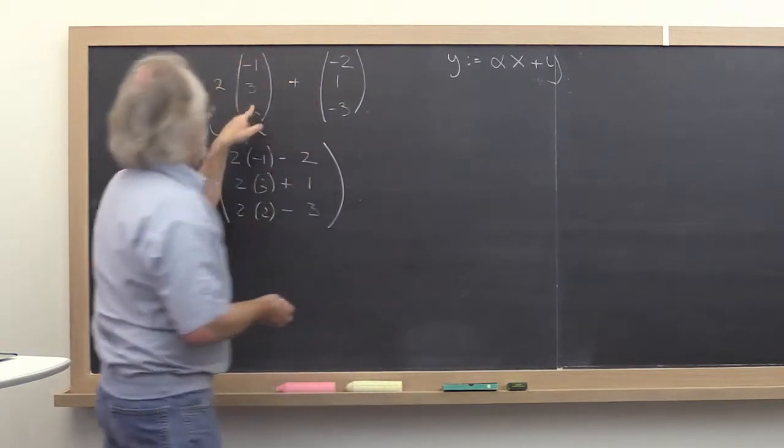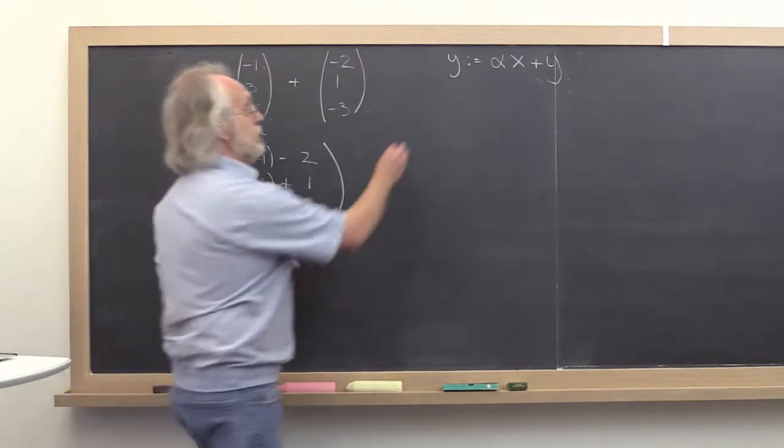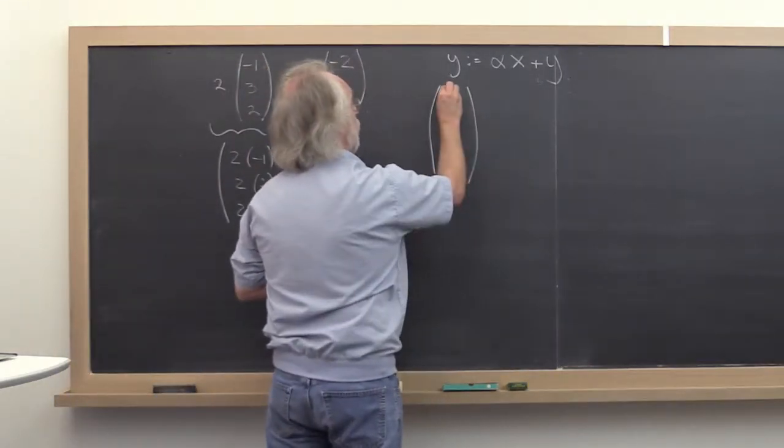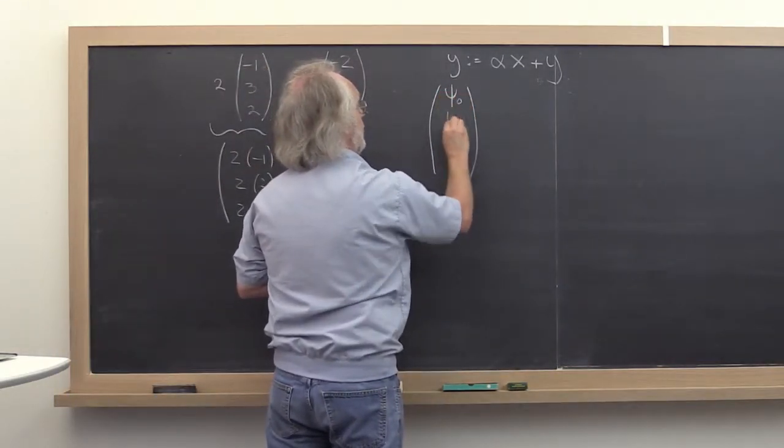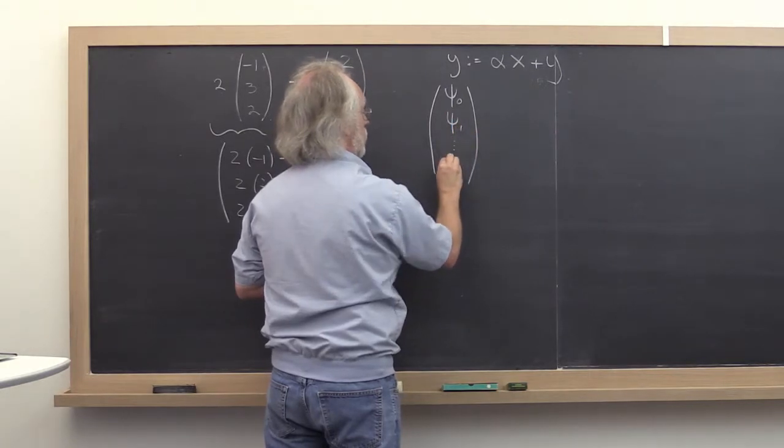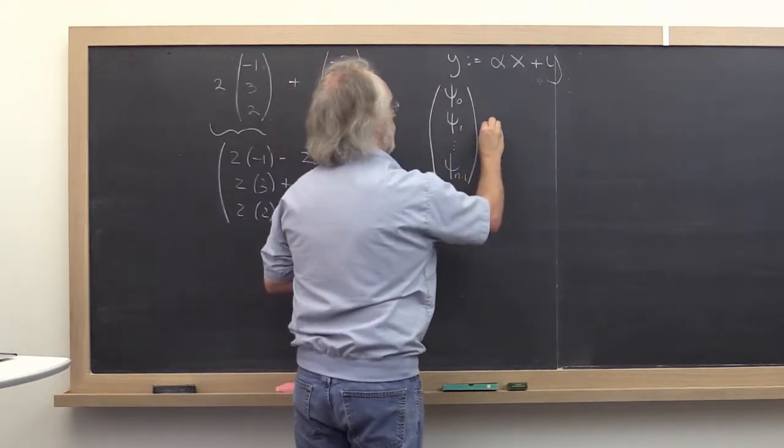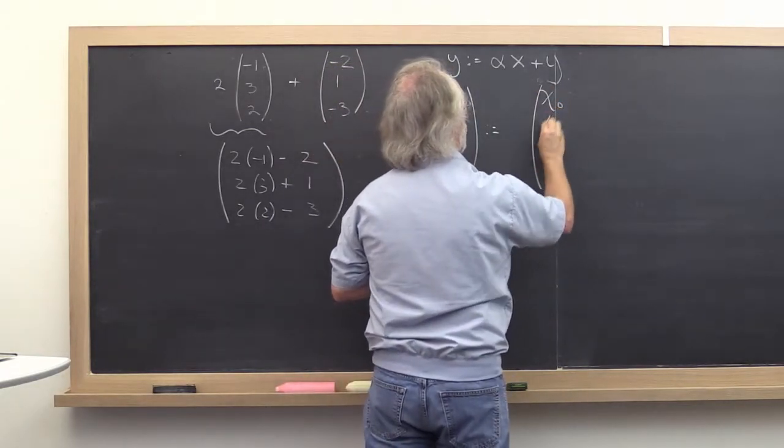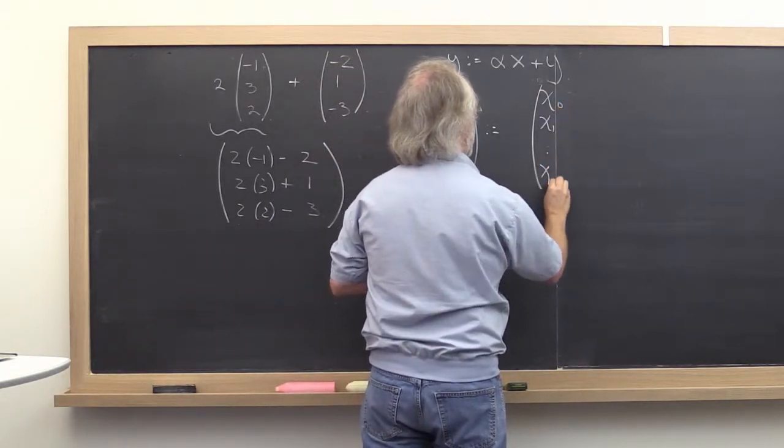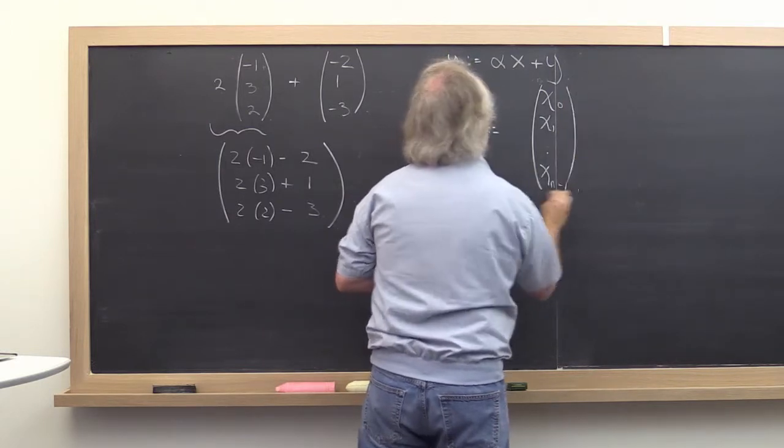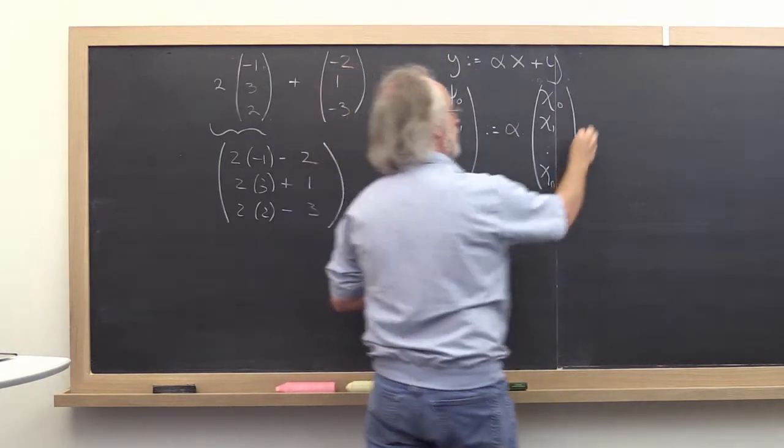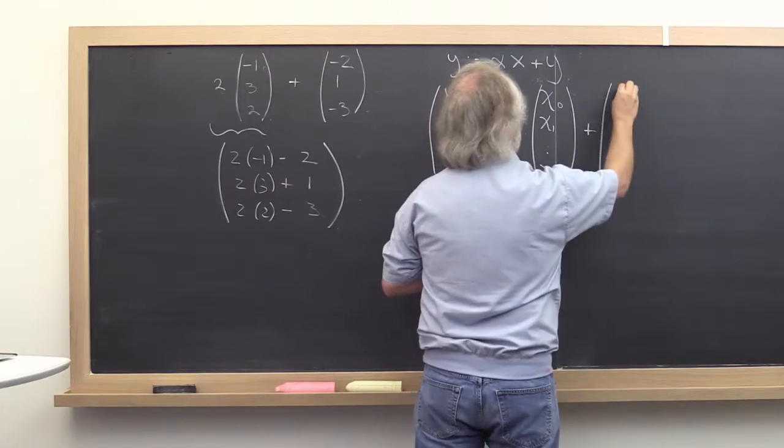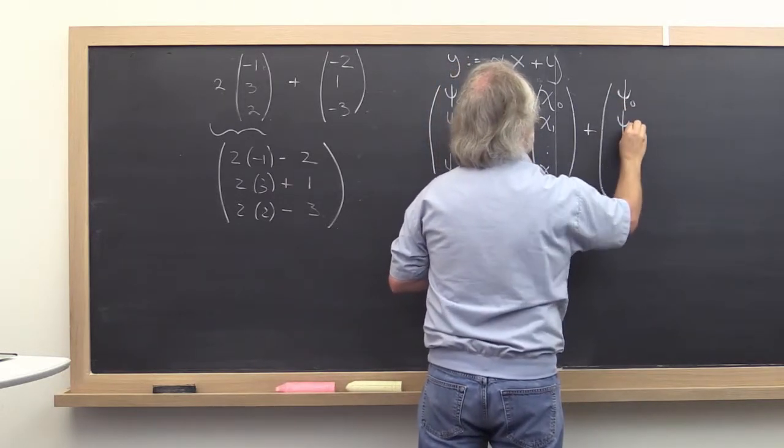So taking our cues from this, what does that mean? It means that if Y has n entries in it, then X better have n entries in it. Chi zero, chi one, through chi n minus one. We are multiplying that by alpha and we're adding that to the vector Y.